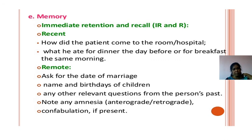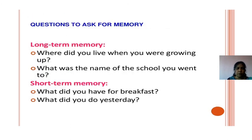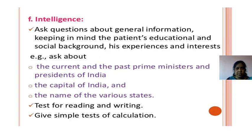Memory: immediate memory, recent memory, and remote memory. For recent memory, ask what breakfast or dinner the patient had. For remote memory, ask date of marriage, birth dates of children, or other past events — long-term and short-term memory assessed. For intelligence: ask questions appropriate to the patient's educational background, such as 'Who is the captain of India?' or 'Who is the prime minister?' Also assess reading and writing.